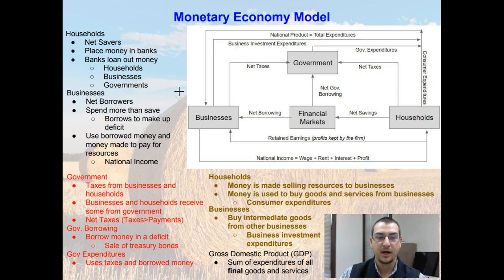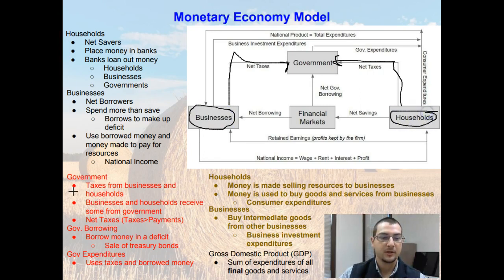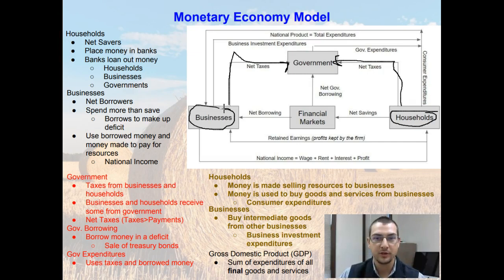If we move up to the top half of this model, we're going to start looking at the government. The government earns money by collecting taxes from the businesses and households. So the government receives taxes from both households and businesses. Sometimes the businesses and households may receive some money from the government — this might be subsidies going to businesses to help them produce more goods, or it might be a social program going to households, something like welfare or unemployment. But on the aggregate, both households and businesses pay more in taxes than what they receive, so we say these are net taxes.